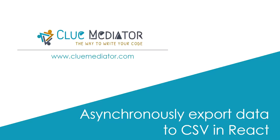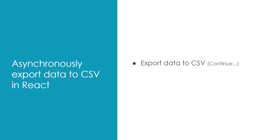Hello friends, in this video I will show you how to fetch data from an API and export it in CSV format. In the previous video we explained about exporting static data in a CSV file, but here we will asynchronously export data to CSV format. I recommend you check that previous video first — I will also add the link in the description box.